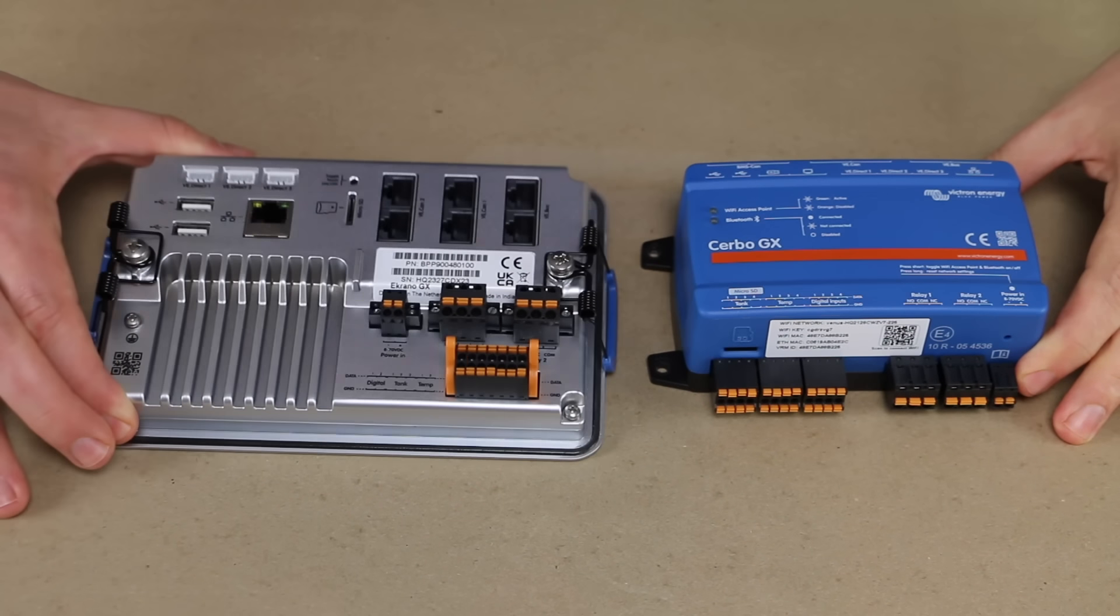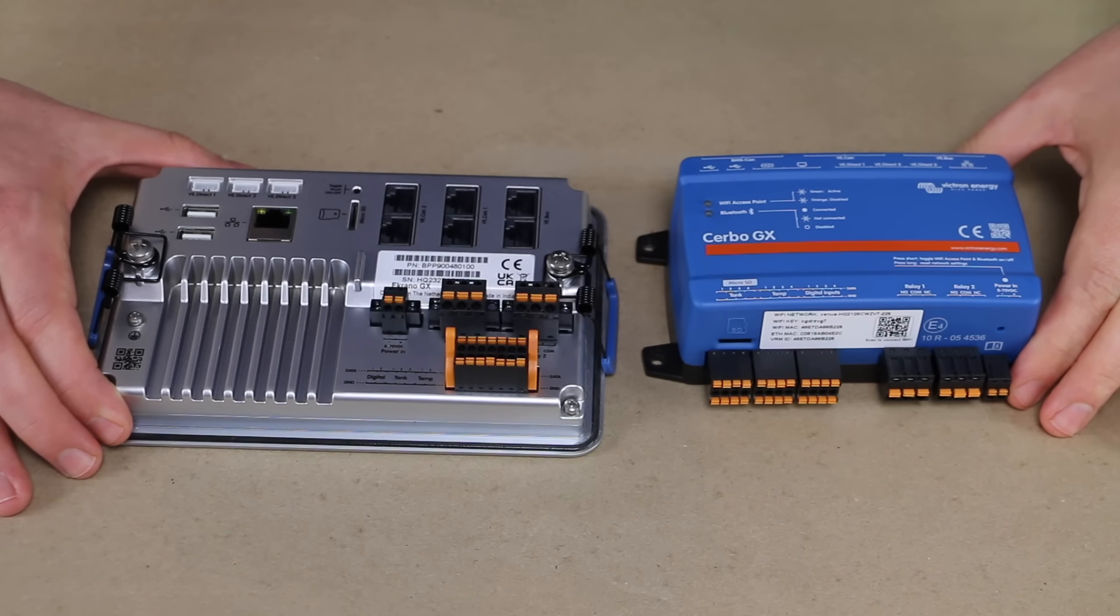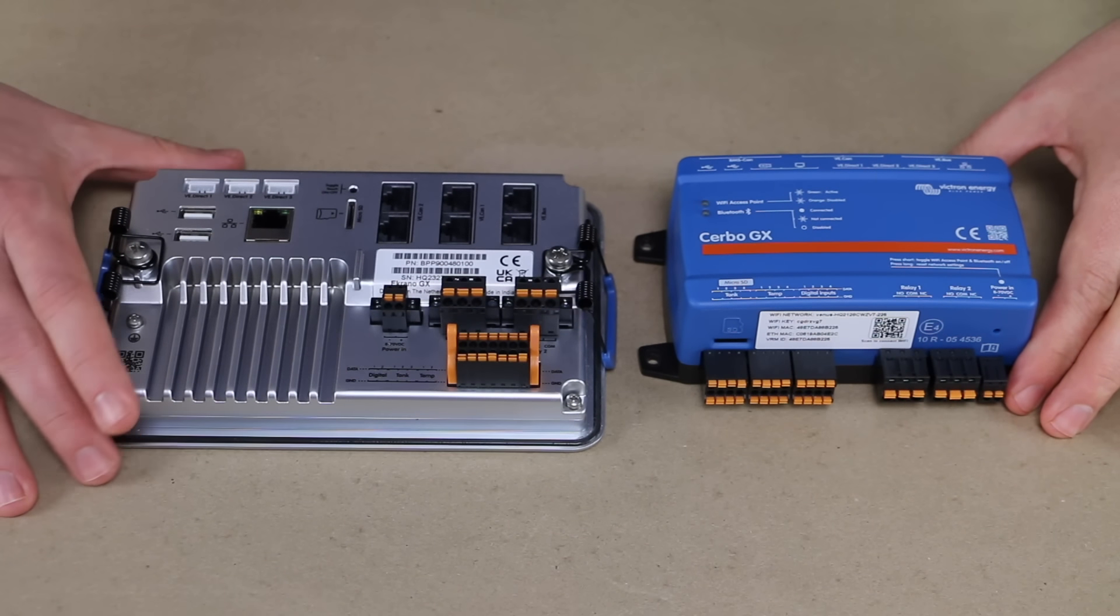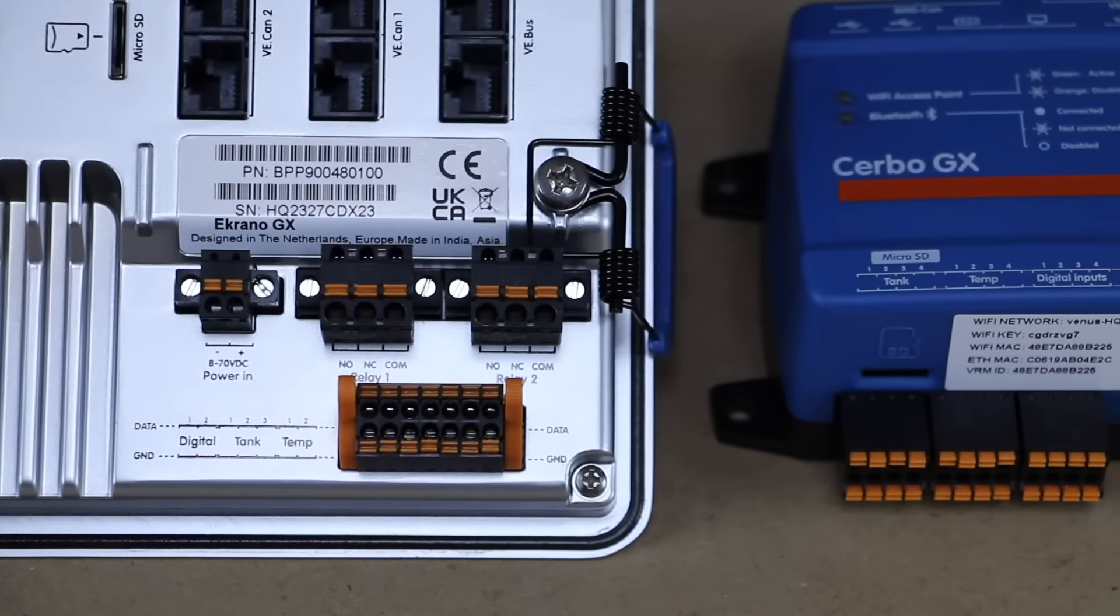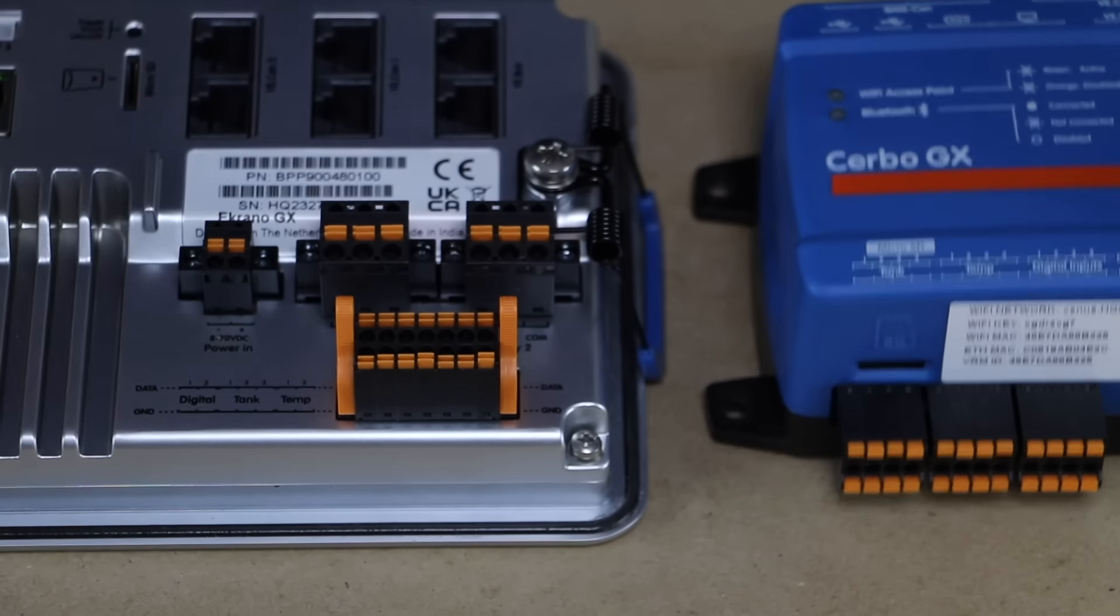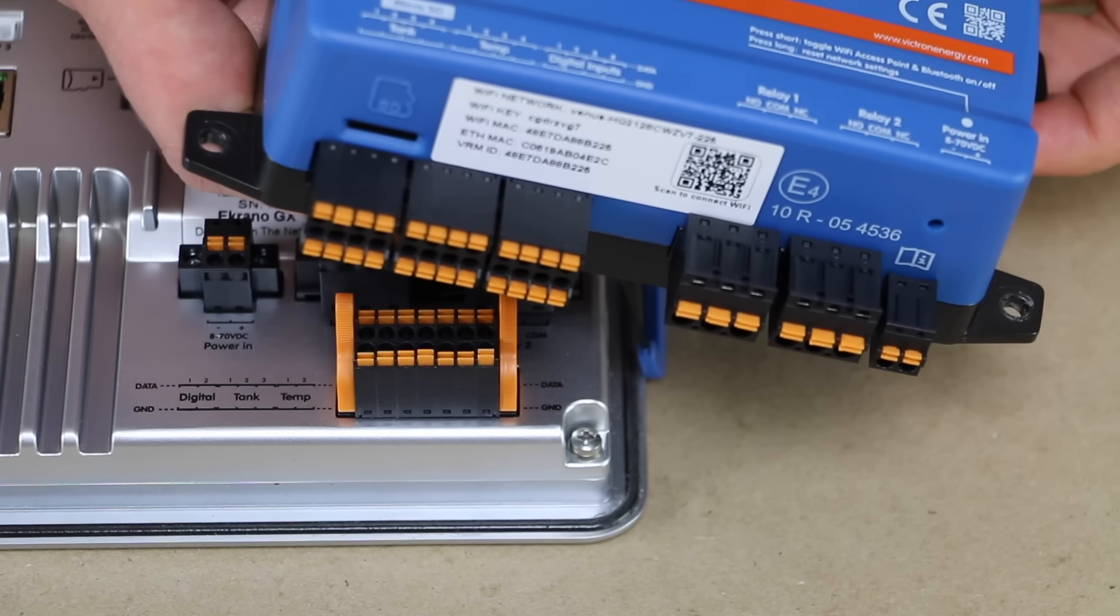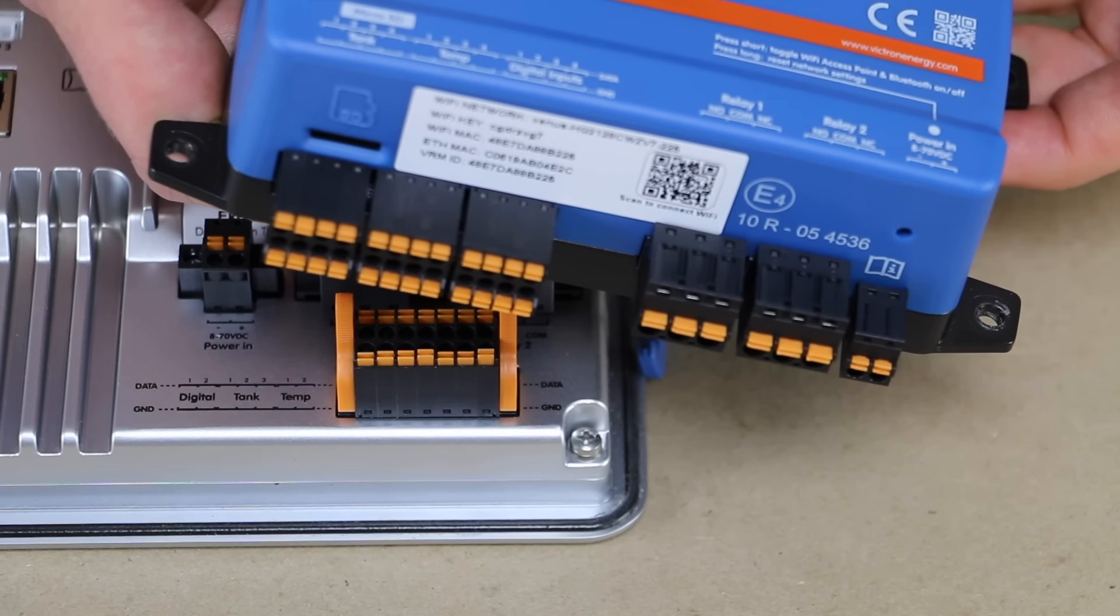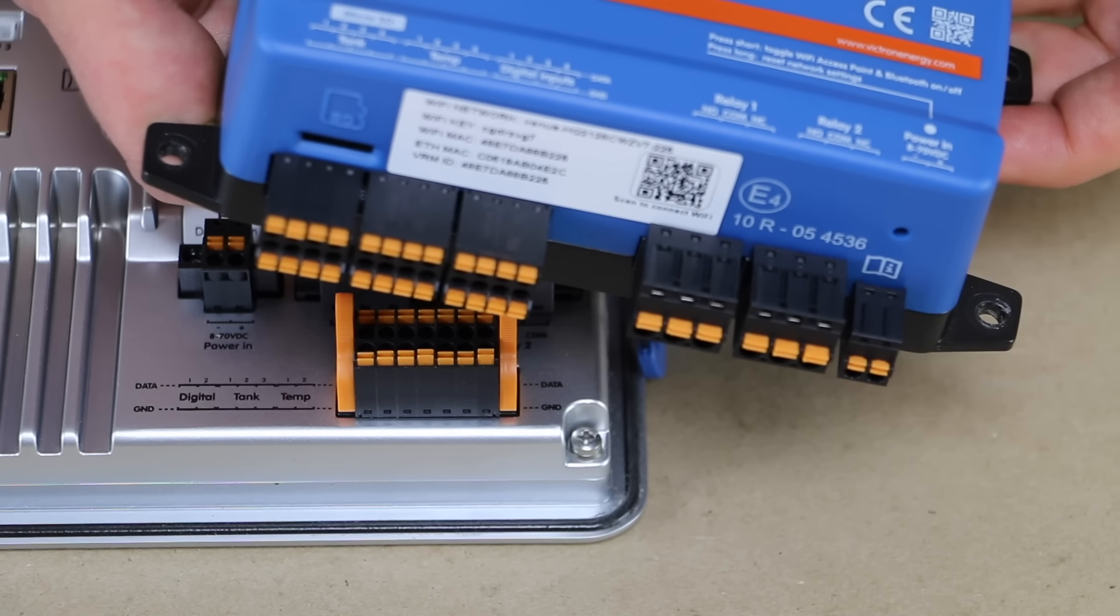All right, so we have the Ekrono here and the Serbo. And what I want to do is go ahead and start with the similarities and I'm going to run through the things that they both have. So let's zoom in a little bit and I'm going to start off and show these two relays here on the Ekrono. You can see the same two relays there on the Serbo. So those are programmable relays that can be set to go off under different parameters to start an engine or start a generator, something like that. So they both have those.